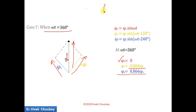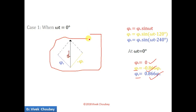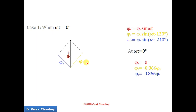At ωt = 360°: φR = 0, φY is negative, and φB is positive. Now looking at ωt = 0°: φR is also 0, φY is negative, and φB is positive. So the vector diagram at 360° and at 0° are the same. This confirms the cycle is complete. We have done analysis for ωt = 0°, 60°, 120°, 180°, 240°, 300°, and 360°, each taken at an interval of 60°.